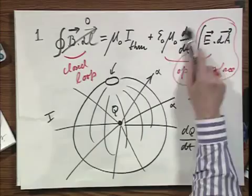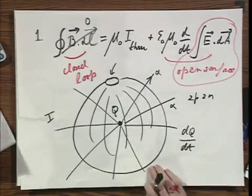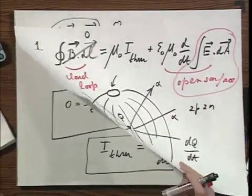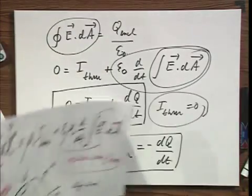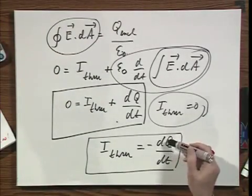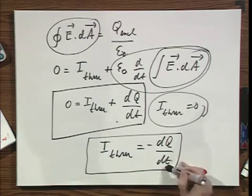it derives in a very complicated way, an answer which we already knew, namely that the current is nothing but the charge per unit time.